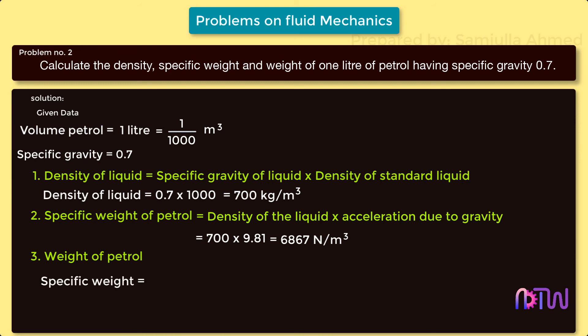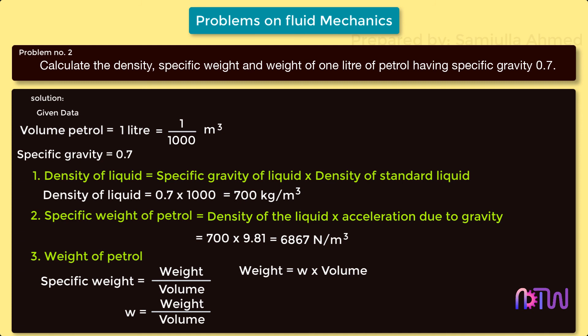Third, weight of petrol — specific weight equals weight divided by volume, so weight equals specific weight into volume. For petrol: weight = 6867 × (1/1000), therefore weight of the petrol is 6.867 newtons. Hence we found out density, specific weight, and weight of the petrol.